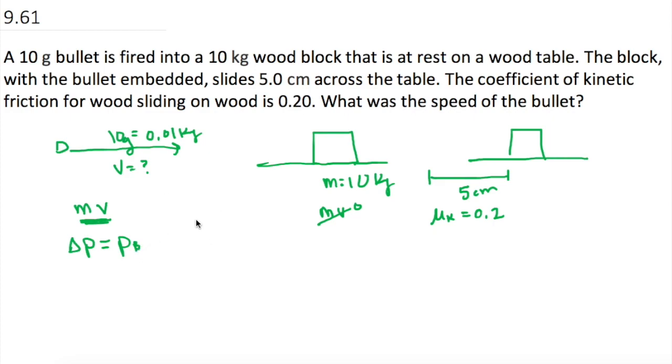All right, so now basically we can treat this, going back to the relationships that we had before, of J, or impulse, is equal to the average force times time, which is also equal to delta P. We're going to try to find these two guys right here to solve for the final velocity. So delta P, or P for the bullet, is equal to the average force times time.